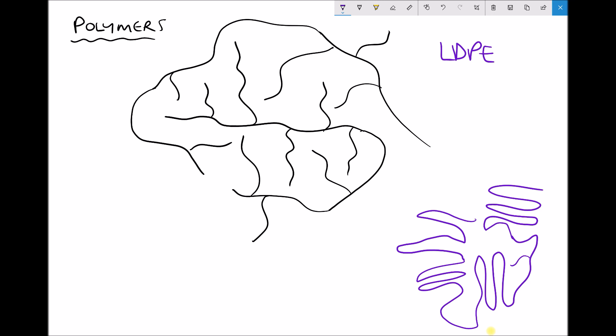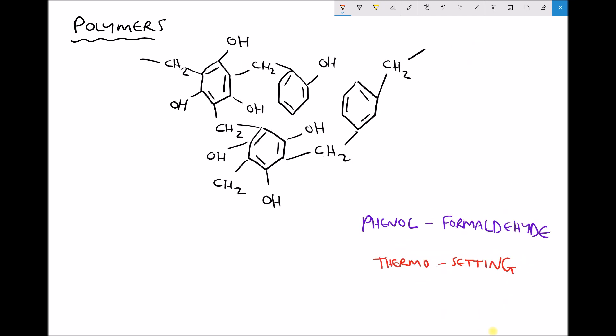Now at the far end of this crystallinity continuum we're going to have materials that are almost completely amorphous. And we'll just sketch an example of one of these now. So here we have an example of a polymer called phenyl formaldehyde. And phenyl formaldehyde is used for things such as electrical sockets and electrical fittings. Because of its applications it needs to be very heat resistant. And in fact it's actually a thermosetting plastic.